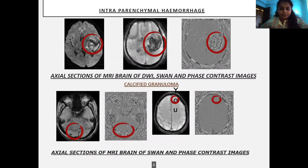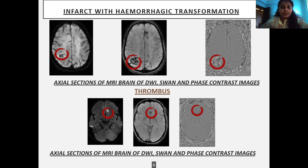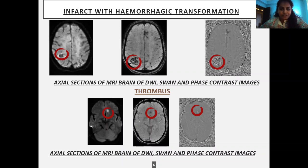Another example shows infarct with hemorrhagic transformation, where blooming in the right parietal region is seen and the corresponding phase contrast image shows signal dropout with no hyperintense signal, favoring hemorrhage. Next is an example of a patient with thrombus, where diffusion restriction with corresponding blooming is noted, and in the phase contrast image there is signal dropout favoring thrombus.